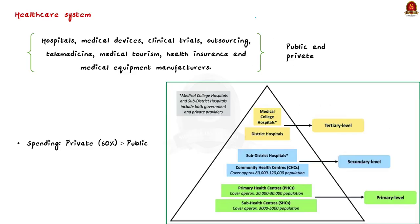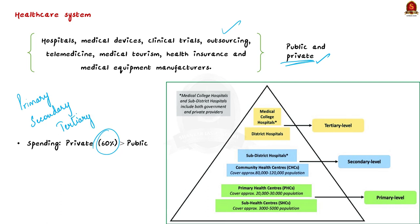First, let me tell you what constitutes the healthcare system in our country. It includes hospitals, medical devices, clinical trials, telemedicine, medical tourism, health insurance, medical equipment manufacturers, etc. These are provided not only by the government but also by the private sector — to the extent that private spending constitutes nearly 60% of overall expenditure on health. The public health system mainly focuses on primary health services, while the private sector concentrates on secondary and tertiary health care, mostly in Tier 1 and Tier 2 cities.